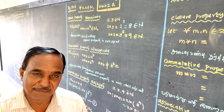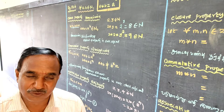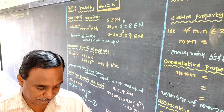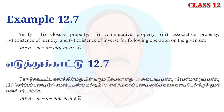We will show Example 12.7. We will verify the Closure Property, Commutativity Property, Associativity Property, Existence of Identity, and Existence of Inverse for the following operation on the given set: M star N is equal to M plus N minus MN.